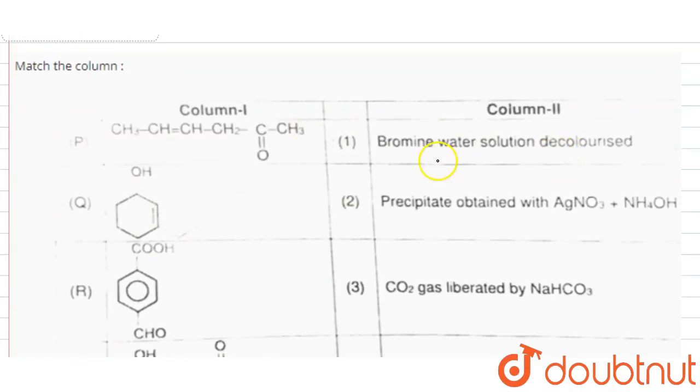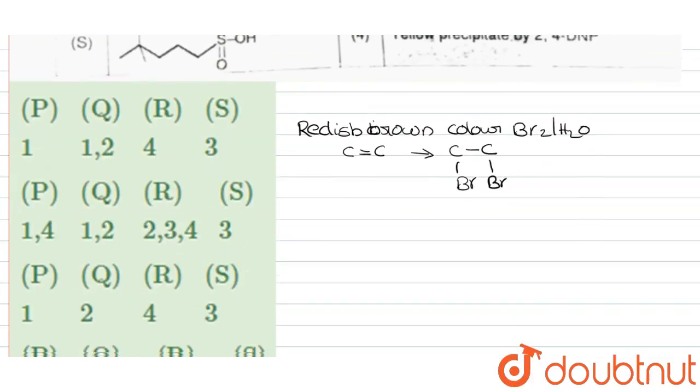The second test is precipitate obtained with AgNO3 plus NH4OH. This means the acidic hydrogen replaced by Ag+ ions.